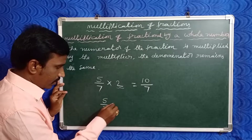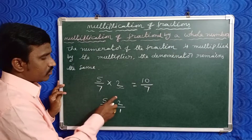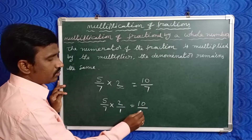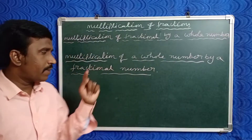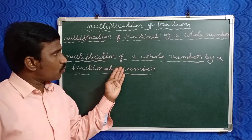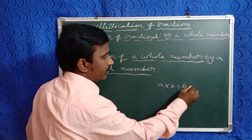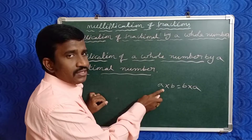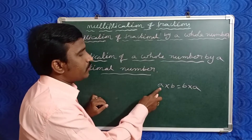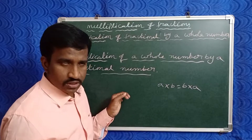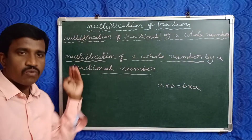We can also write it as: five by seven into two, where two can be written as two by one. So five into two is ten, by seven into one is seven. Now check the second model: multiplication of a whole number by a fraction number. Both are equal because a into b equals b into a — this is the commutative property with respect to multiplication. So multiplication of a fraction by a whole number and multiplication of a whole number by a fraction give the same answer.